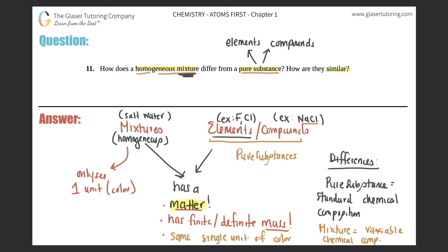What does that mean? If we look at table salt, which is a pure substance — NaCl — it will look white every single time. That's a standard composition. However, if we talk about a homogeneous mixture like milk and coffee, the physical composition you see differs depending on how much milk you put in. A little milk gives the coffee a dark brown color, but a lot of milk gives it a light brown color. That's the difference in variable composition.